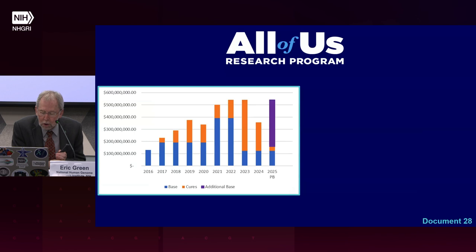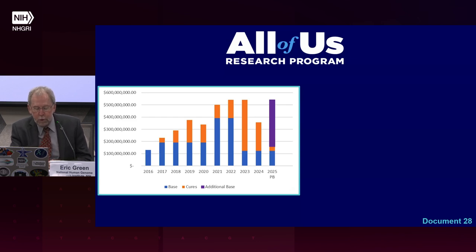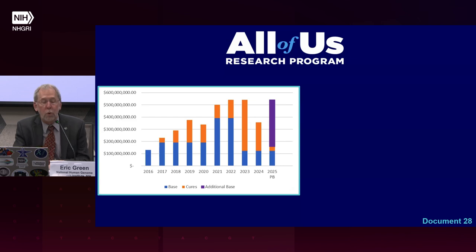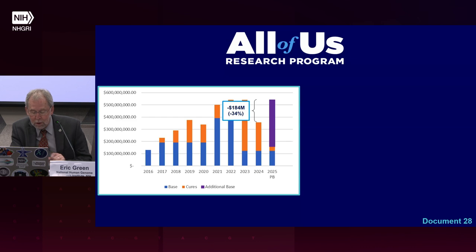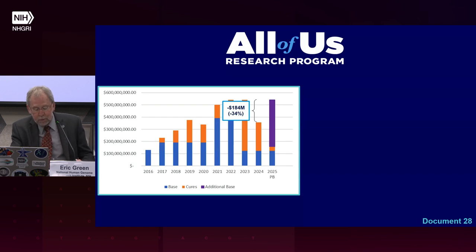However, all is not good news for the All of Us Research Program. For complicated reasons, the program received a significant funding cut in their FY2024 appropriation. All of Us funding was $541 million in FY2023, but due to a drop in 21st Century Cures Act funds, the program is only receiving $357 million in FY2024 — an immediate overall decrease of $184 million, or a 34% reduction. Looking forward, there could be even more significant reductions in Cures Act funds in FY2025 and 2026, after which that funding stream is set to expire unless something is done to fix the downward trajectory.